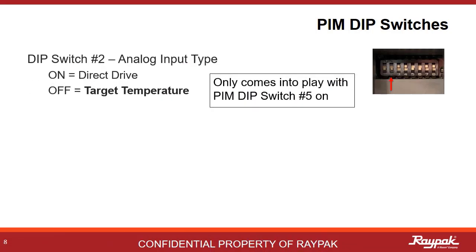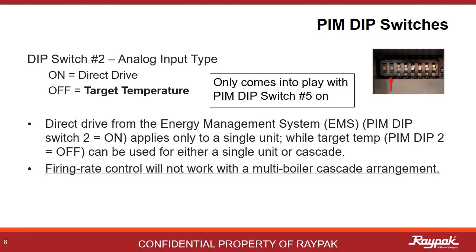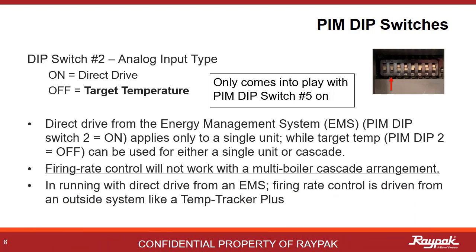Dip switch number two only comes into play when PIM dip switch number five is on. If number five is off, then PIM dip switch number two does nothing. If PIM dip switch number two and number five are both on, then the boiler will be looking for a volt DC signal from an external controller like an energy management system for direct drive function. With dip switch number two off and number five on, the boiler will run to target temperature. This only applies to single boiler systems — firing rate control from an external system will not work in cascade. Attempt Tracker Plus is an example of an outside driver that can be used here with dip switch number two on.